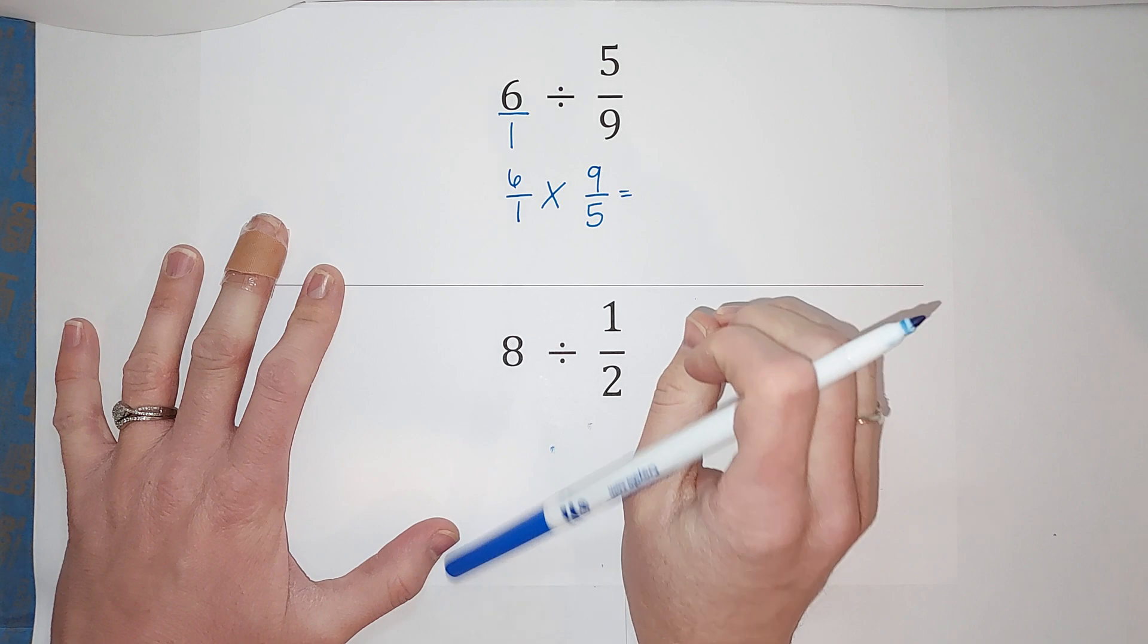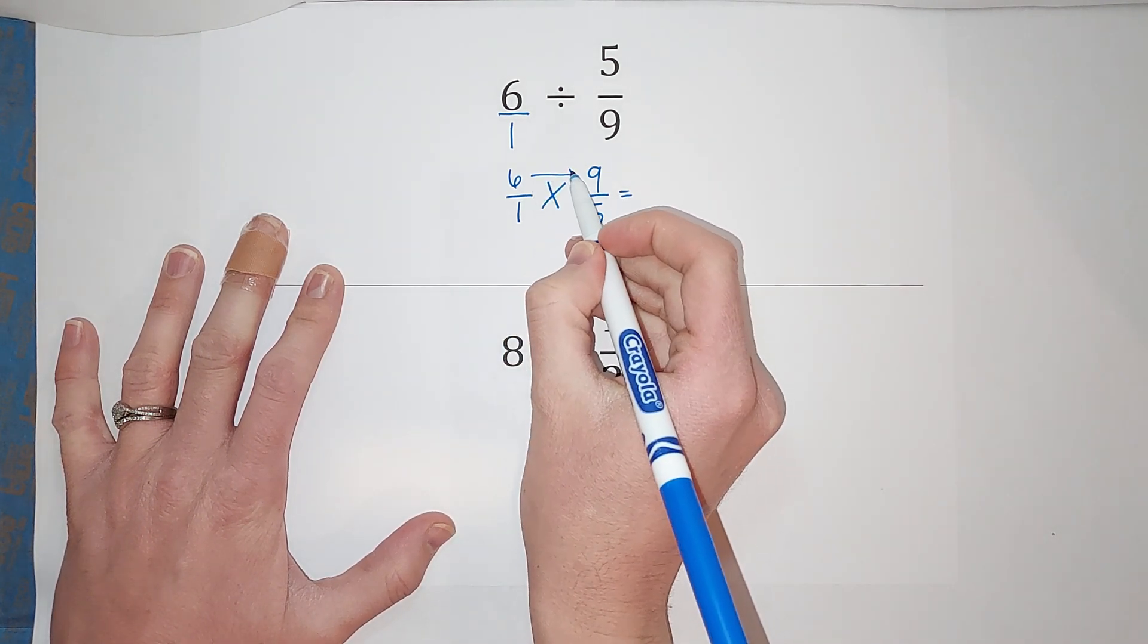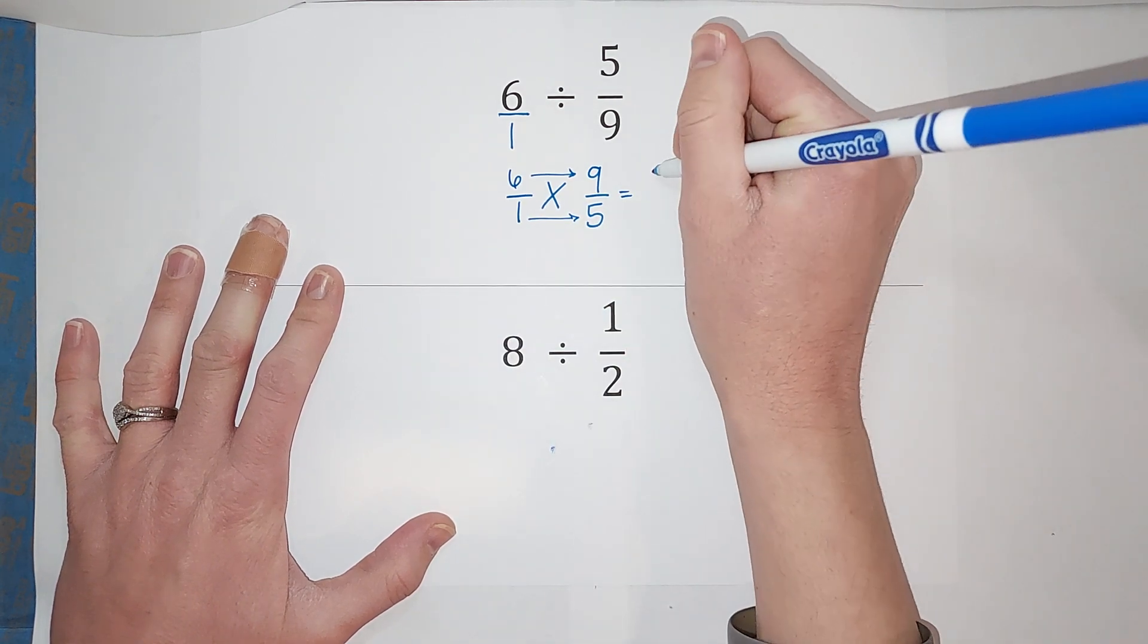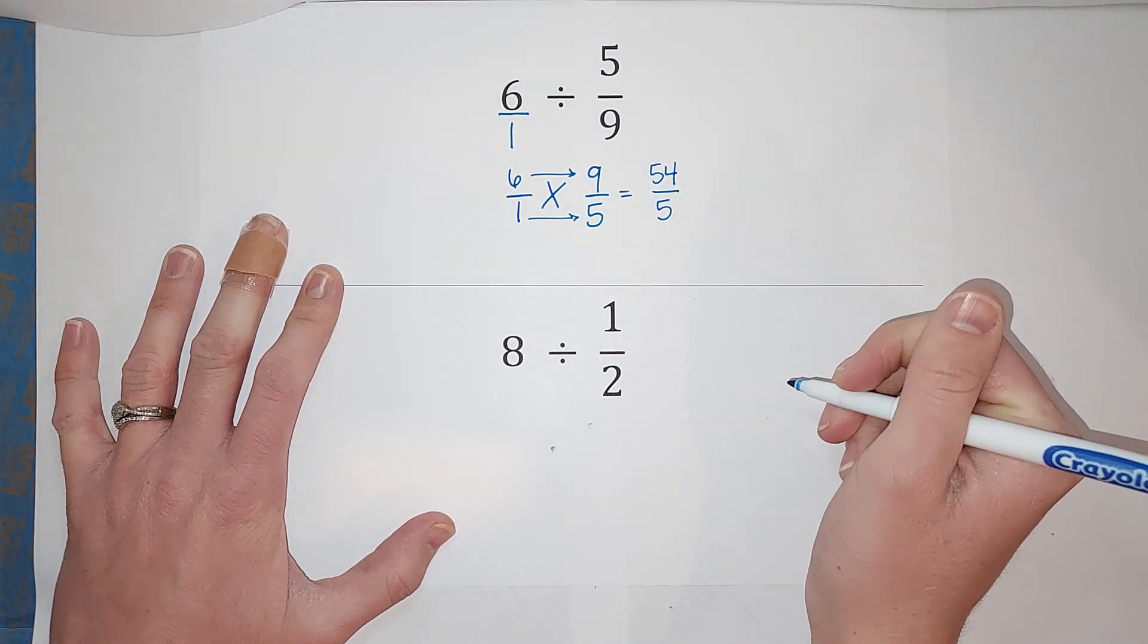That's why we really like multiplying fractions, because they don't have to be the same. You just multiply straight across. Six times nine is 54, one times five is five. Guess what? That's my answer.